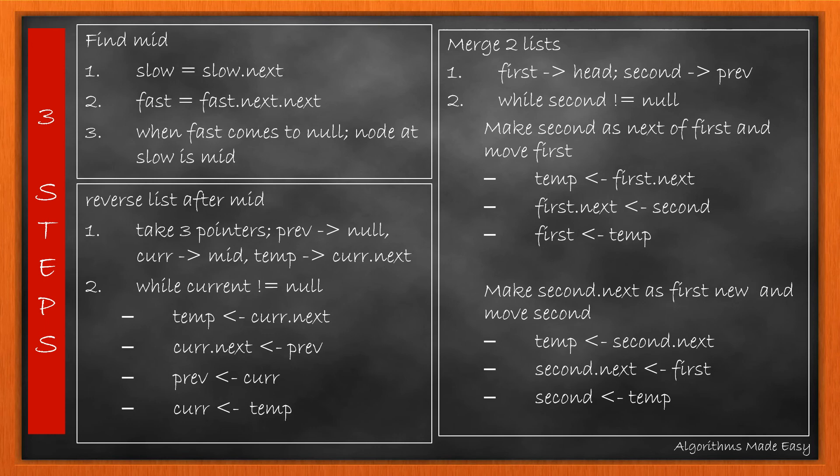And the third step is to merge or weave both lists, first and second, by updating the next pointers of the nodes in these lists. There are three separate questions on each one of the steps on LeetCode. You can check them out for your practice.